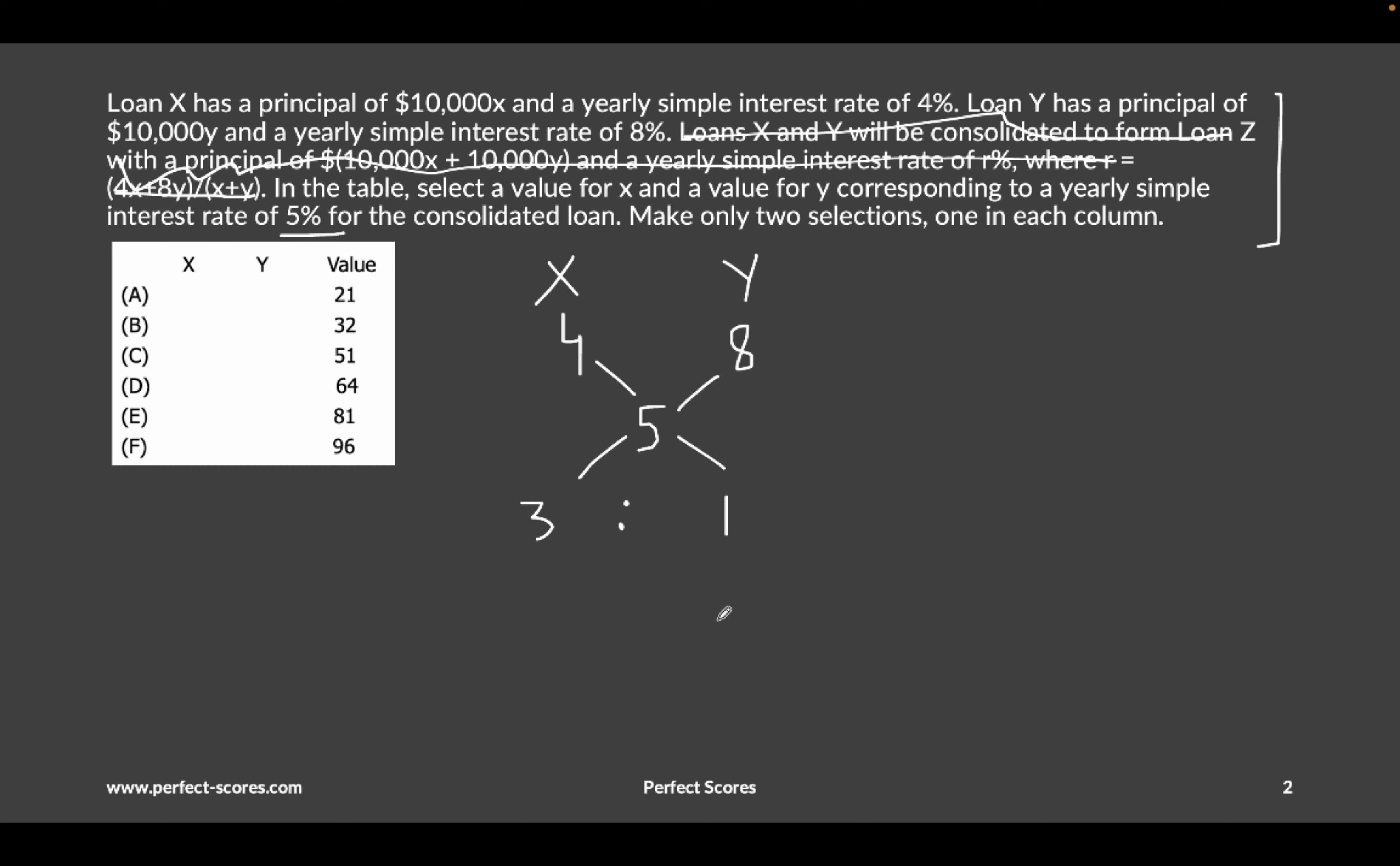If you're not familiar with the concept of alligation, I strongly recommend that you watch that concept. It's going to make your life very easy. So X has to be 3 parts and Y has to be 1 part. What we can do is start looking at the answer options where we can select values of X and Y where X is 3 parts and Y is 1 part.